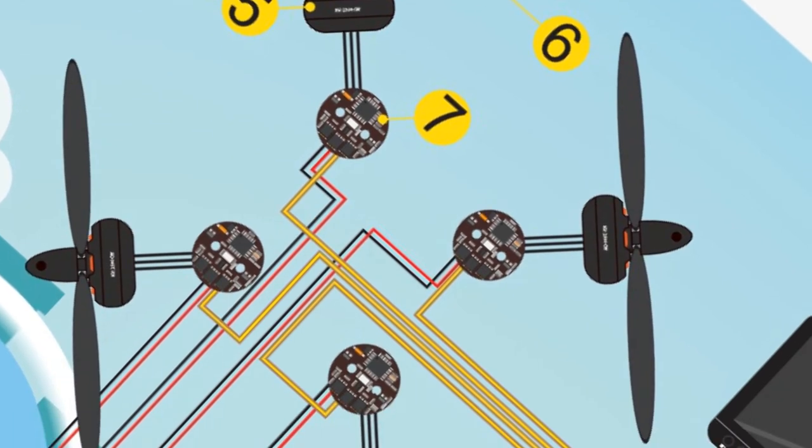The Electronic Speed Controller (ESC) defines the speed of rotation of a brushless motor by generation of pulses. It receives power through the PDB and orders from the flight controller.